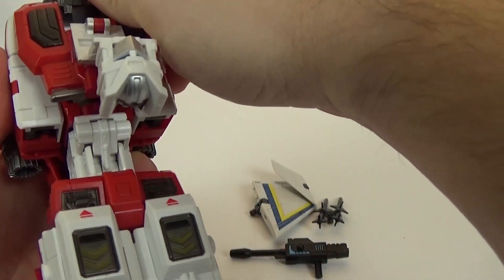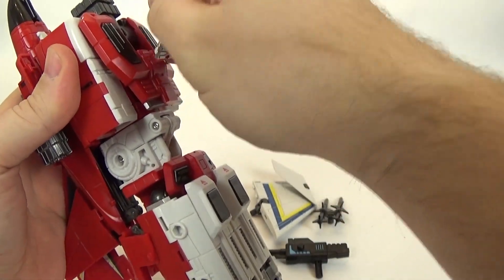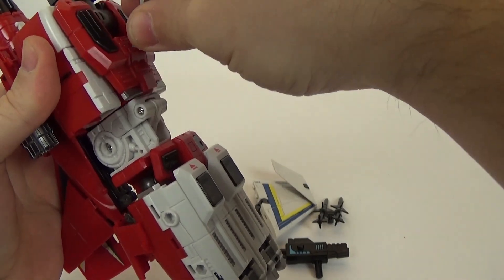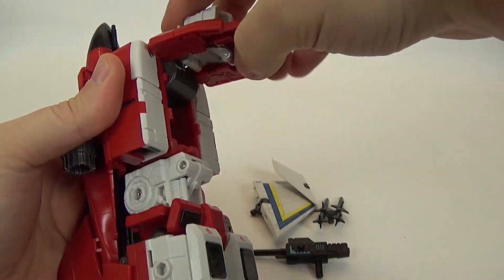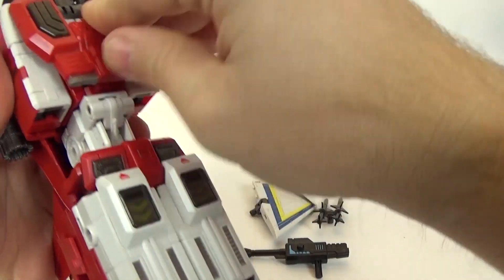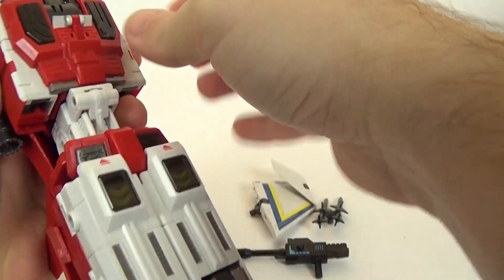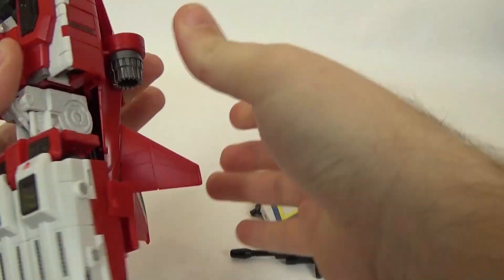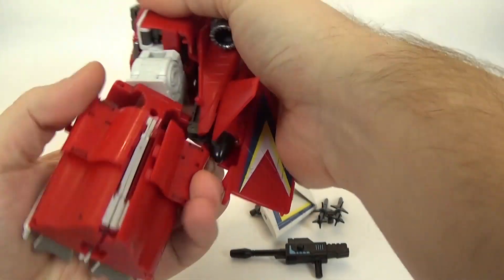And, then the head. I believe is just going to tuck inside. Right inside there. Get that all closed up. Get that pegged back in. And, there you have arm mode. The fist would go in right in there.